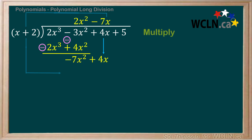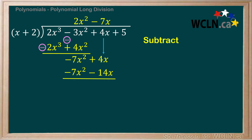Now we multiply our divisor by what we've just written, negative 7x, and write the product underneath what remains of the dividend. Negative 7x times x gives us negative 7x squared, and negative 7x times 2 gives us negative 14x. Next we subtract this product from what remains of the dividend. Remember that both terms are being subtracted, so let's distribute the negative and circle the signs. Negative 7x squared plus 7x squared gives us 0, and 4x plus 14x is 18x. Notice that the first subtraction always gives us 0, which we can take as a sign that we're on the right track.